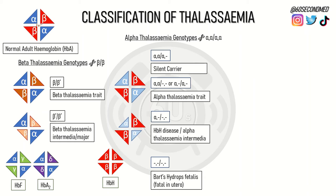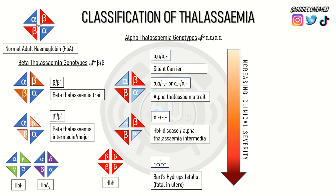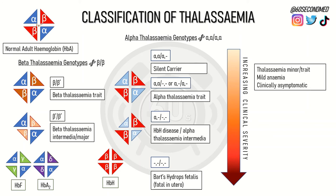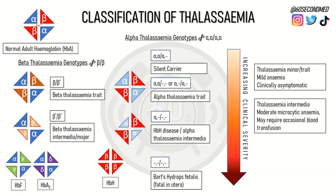These genotypes tend to be further classified as thalassemia minor, intermediate, or major. In practice, this classification is done on the basis of clinical severity. Patients with thalassemia minor have few, if any, symptoms. Patients with thalassemia intermediate may require occasional transfusion, whereas patients with thalassemia major have the most severe symptoms and are dependent on blood transfusion.